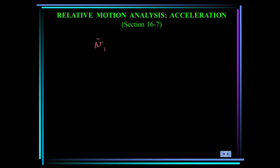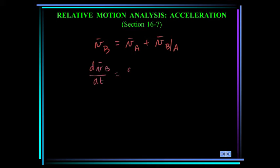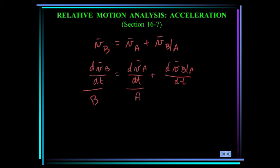Let's recall the relative velocity equation. The velocity of a point B on a body is equal to the velocity of a point A on a body plus the velocity of B with respect to A. We covered that earlier this semester. Now I can differentiate this equation with respect to time. These two terms are the absolute accelerations of A and B, measured with respect to a fixed axis. This term is the acceleration of B with respect to A, and it includes both tangential and normal components.